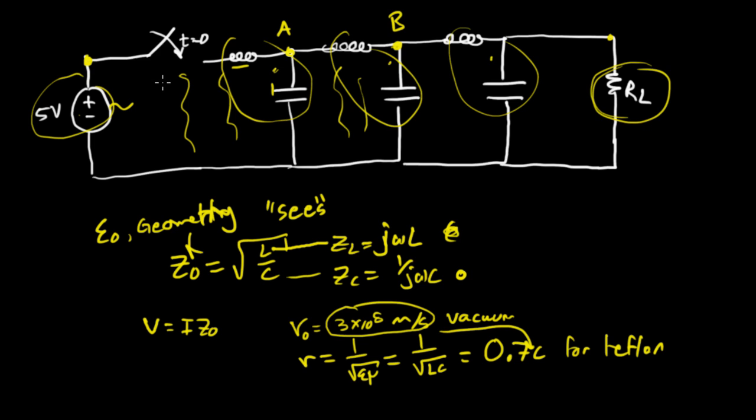Now that I've motivated the transmission line example and why you need to use them, what do I mean by a traveling electromagnetic wave? This is going to become very interesting. It really blew my mind the first time I learned it. It's energy, of course, that's traveling within the dielectric between the source and the load.